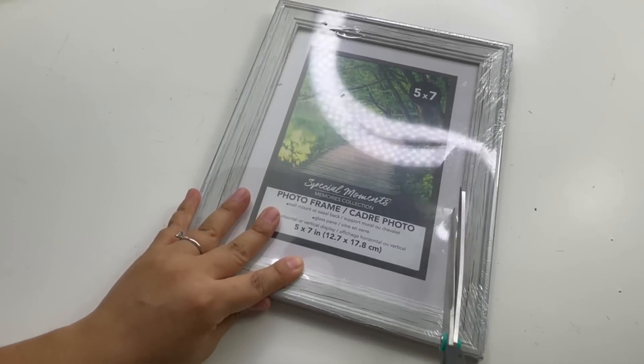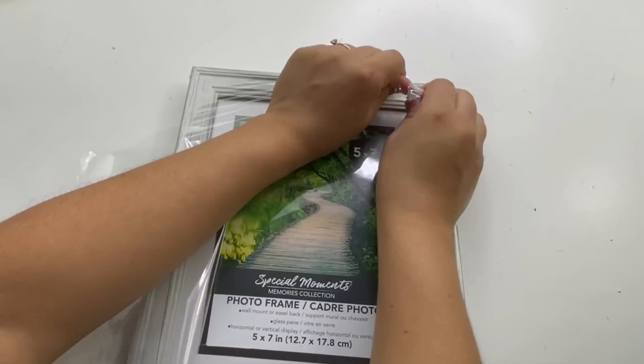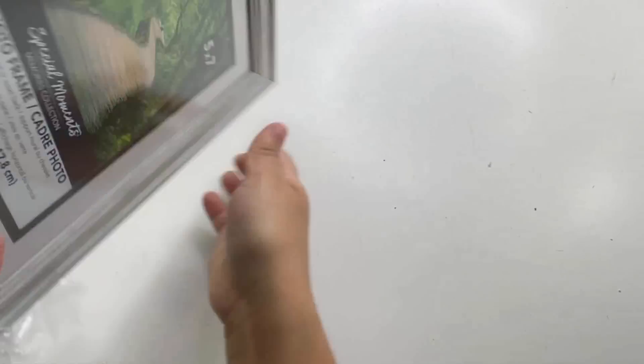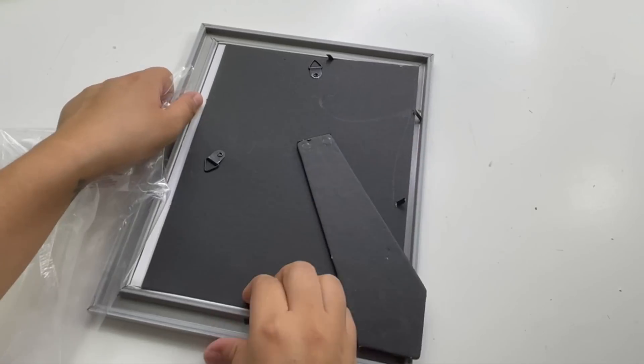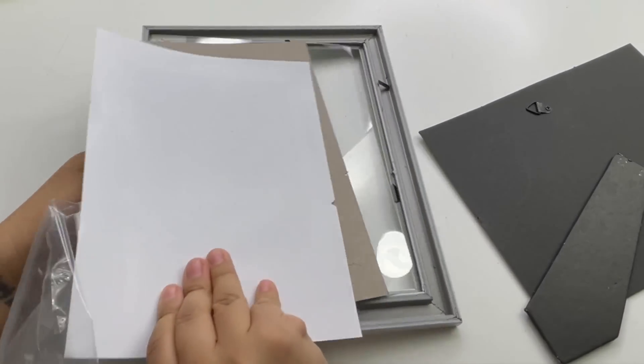For my next project I will be using this beautiful five by seven Dollar Tree picture frame. I am going to remove the glass and the back, and instead I will be adding some of the large popsicle sticks, which I'm going to cut to size first.